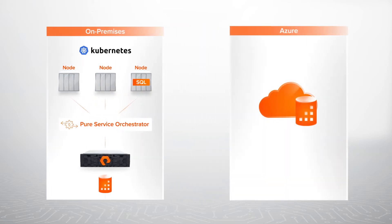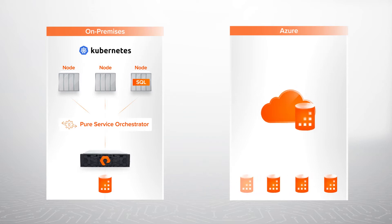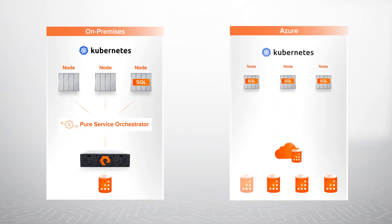We replicate a snapshot of the volume containing our database to Pure Cloud Block Store in Azure, and we'll create several clones of the replicated snapshot. We'll attach cloned volumes to new instances of SQL Server, which will deploy in AKS. Let's see these capabilities in action.